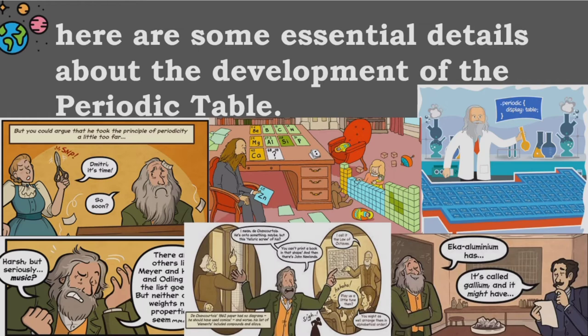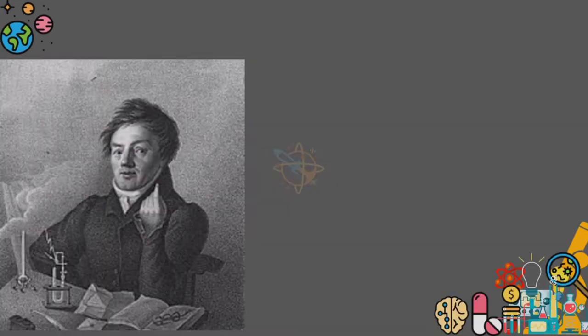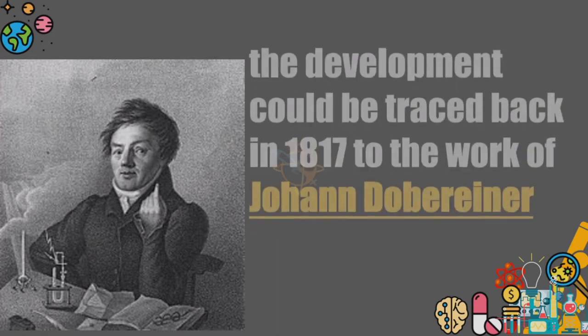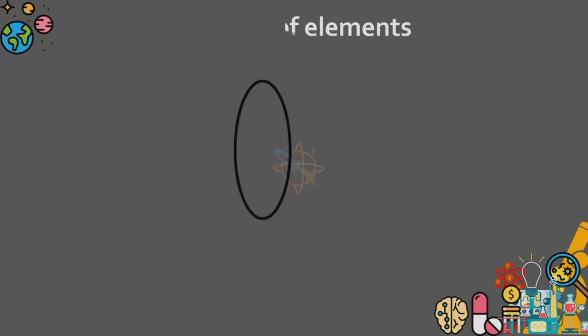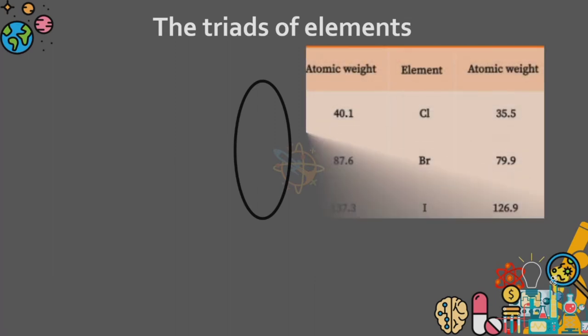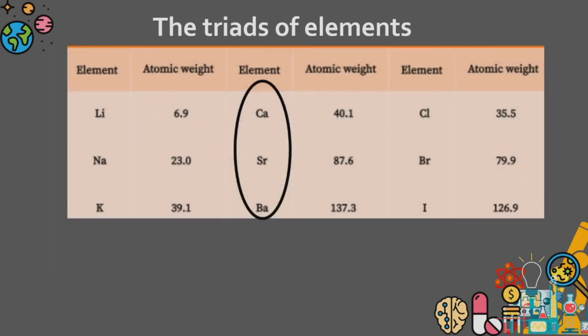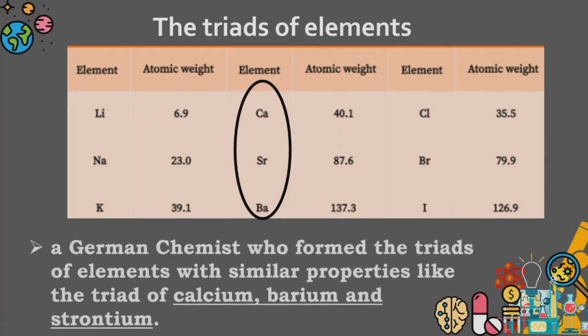Here are some essential details about the development of the periodic table. The development could be traced back to 1817 to the work of Johann Dobereiner, a German chemist who formed the triads of elements with similar properties, like the triad of calcium, barium, and strontium.